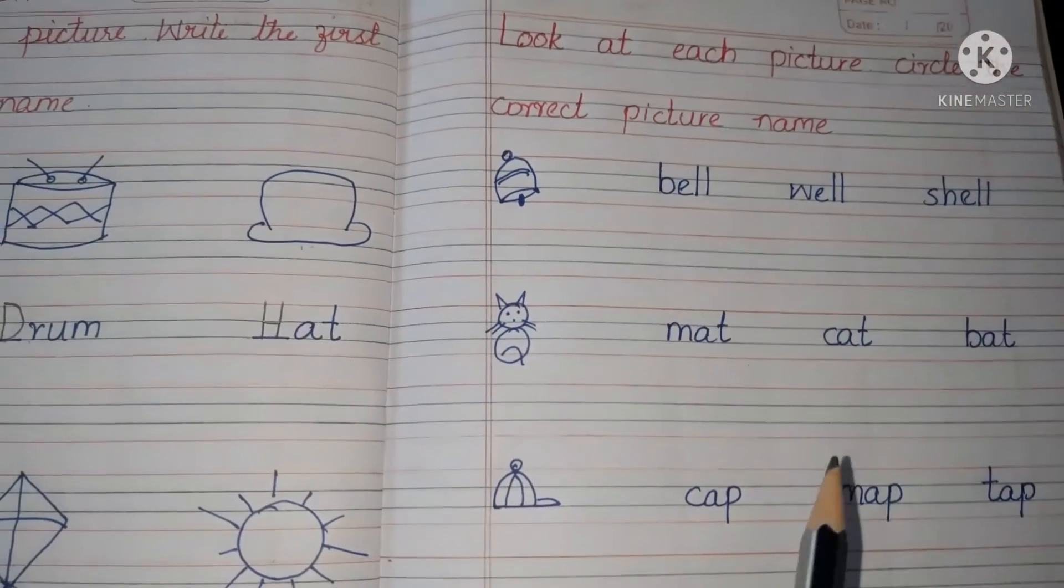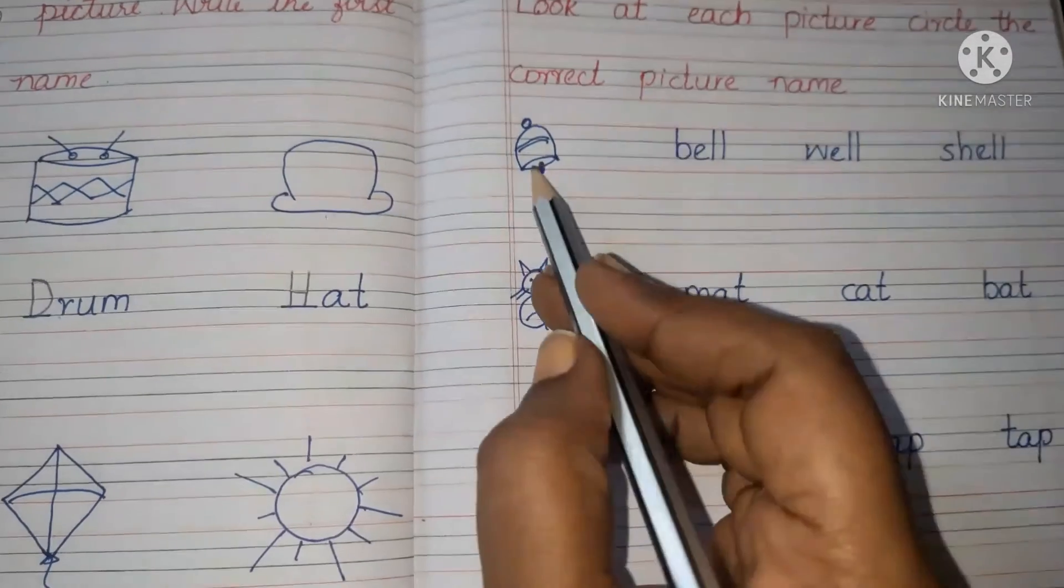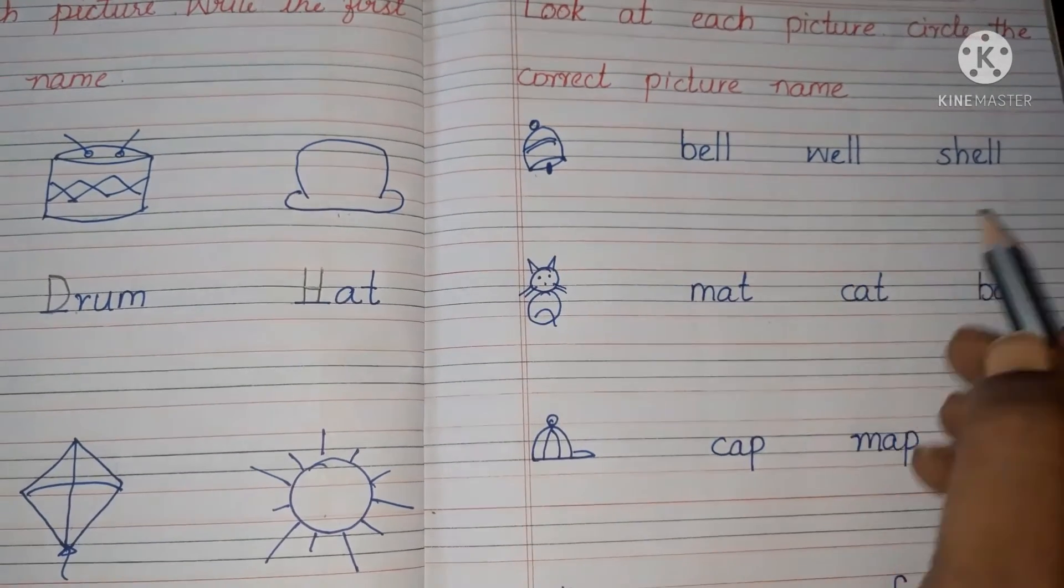Look at each picture. Circle the correct picture name. See the picture here and you have to circle the correct name.